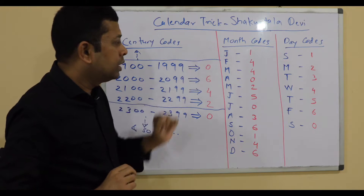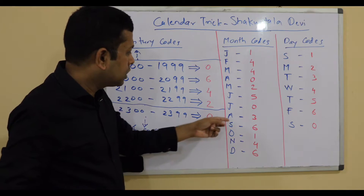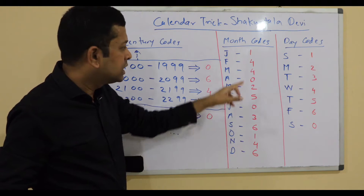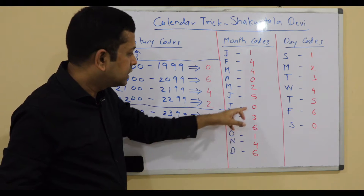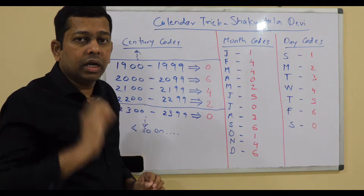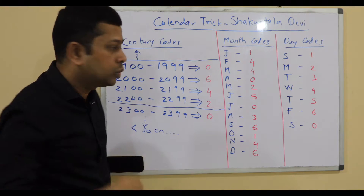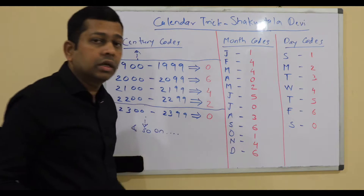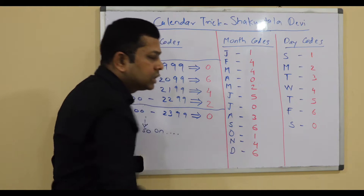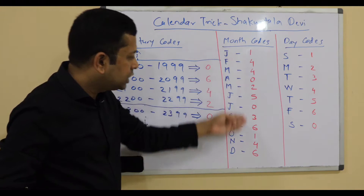Month codes: January, February, March, April, May, June, July, August, September, October, November, December — the codes are 1, 4, 4, 0, 2, 5, 0, 3, 6, 1, 4, 6. There is a memory aid: 1-4-4 is 12 squared; 0-2-5 is 5 squared; 0-3-6 is 6 squared; and 1-4-6 is 12 squared plus 2. You can just remember that to recall the month codes.